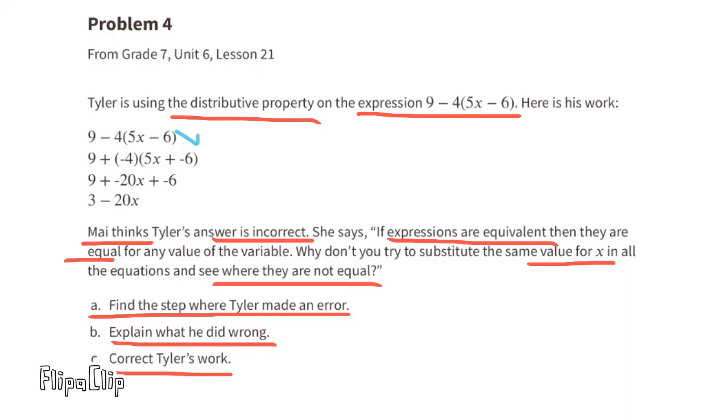He's copied down the first step correctly. 9 minus 4 times 5x minus 6. He's even written down the correct second step, where we have 9 plus a negative 4 times 5x, and that negative 4 is also times the negative 6. That negative 4 times a positive 5x equals negative 20x, but that negative 4 times the negative 6 should be a positive 24, and not a negative 6. So that's where he's made his mistake.